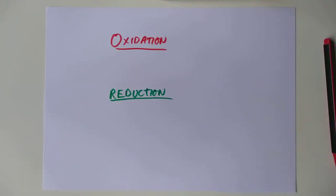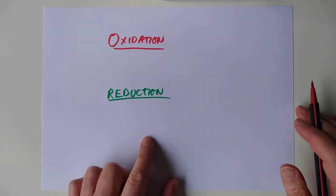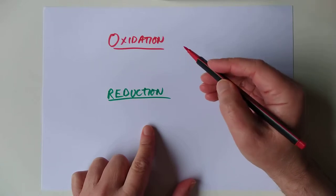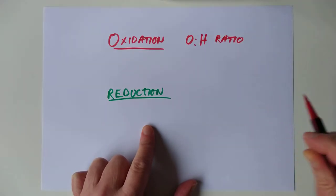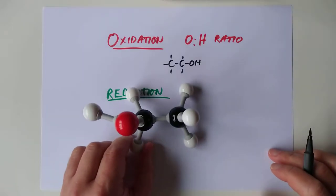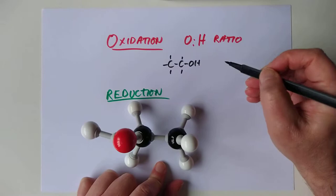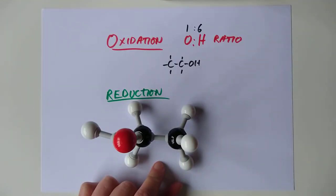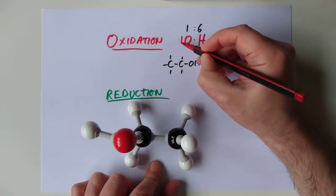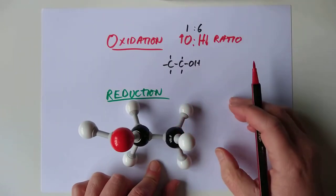You've probably come across these terms before. If you've done Unit 3 stuff, then you will have done these terms before in terms of movement of electrons. But this is the organic section, the better one in my opinion. We're going to define oxidation and reduction in terms of the oxygen to hydrogen ratio in a molecule.